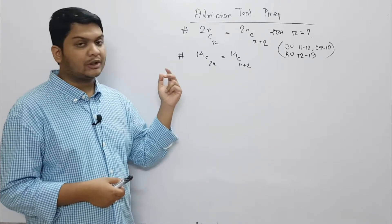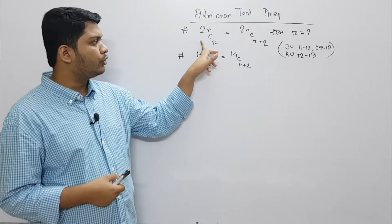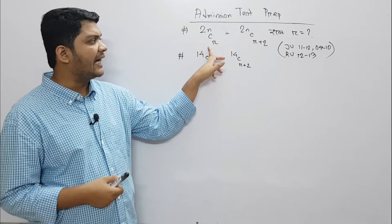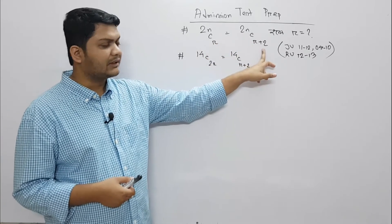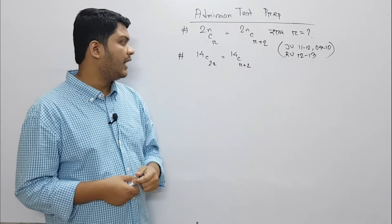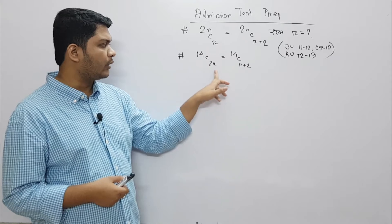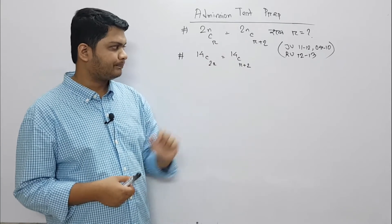First, we have two solutions. One is 2Cr is equal to 2Cr plus 2. This solution is 14C(2r) is equal to 14C(r+2).